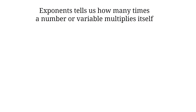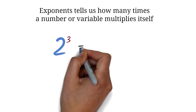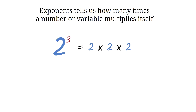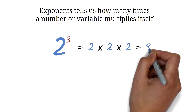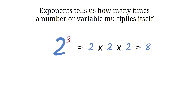Exponents simply tell us how many times a number or variable multiplies itself. So 2 exponent 3 means 2 is multiplying itself 3 times — that is 2 times 2 times 2, which is 8. Please do not confuse it with 2 times 3, which is simply 6. For an exponential term, the number here is called the base and the number here is the exponent. Please take note of this.